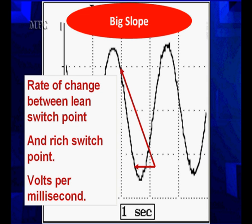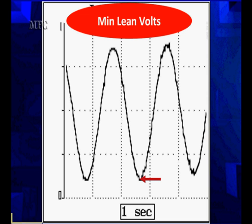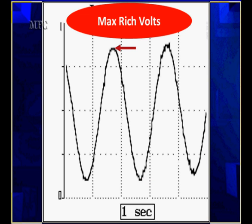Big slope is a measurement that Chrysler does, which is measuring the volts per millisecond between the rich points. It's the rate of change, volts per time. You're going to have them from between the lean switch point and the rich switch point. What is the minimum lean voltage? This is a value we need to know if we're going to do some other testing. It's got to be below 0.1 volt. Then the max rich volt, it must be above 0.85. This tells you how far you're going each direction.